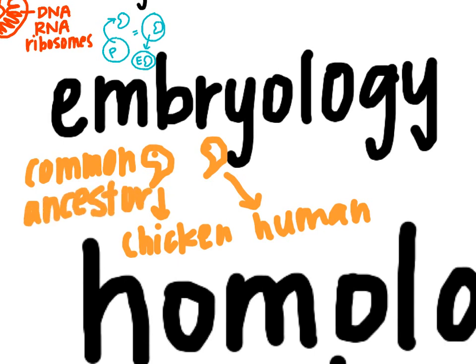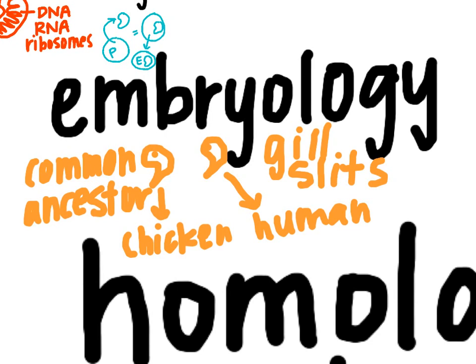The other peculiar thing is that at this early stage of development, we all have gill slits, which we don't need. It's not so that we can breathe in the womb, because an embryo gets oxygen from its mother's blood. The idea is that maybe the reason we have gill slits is because somewhere along the line we have a common ancestor with a fish, and fish have gills.